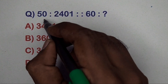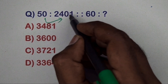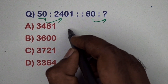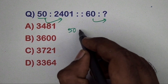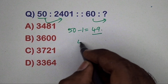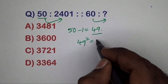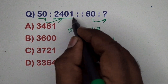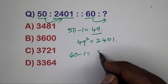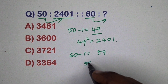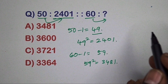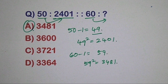Next question: 50 related to 2401, 60 related to which number? Take 50 minus 1 equals 49, and 49 squared equals 2401. Same way, 60 minus 1 equals 59, and 59 squared equals 3481. So option A is the correct answer.